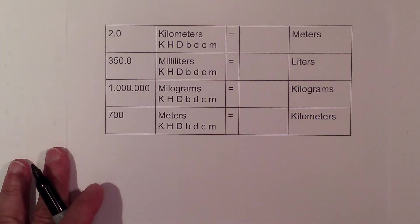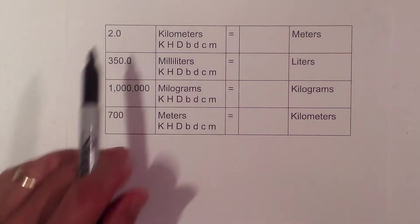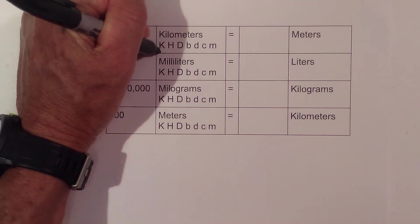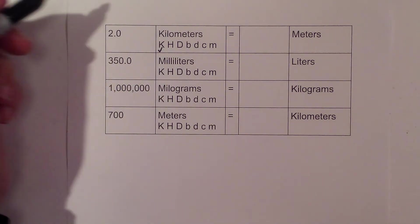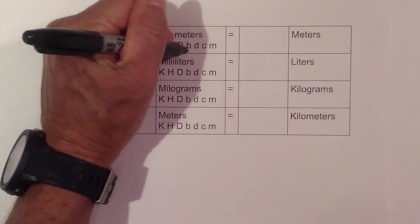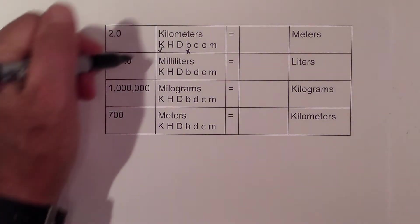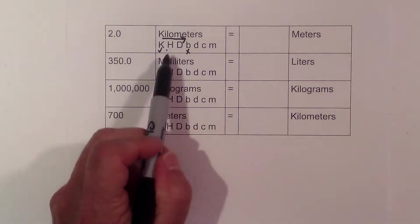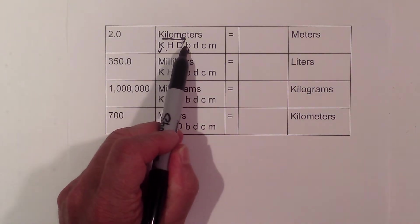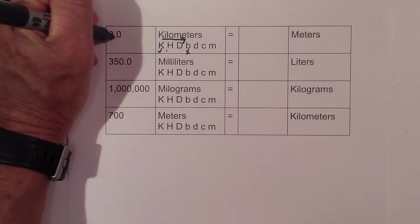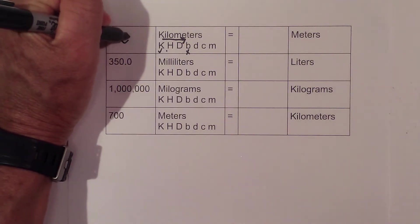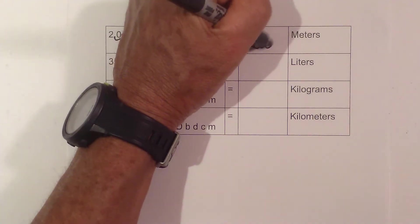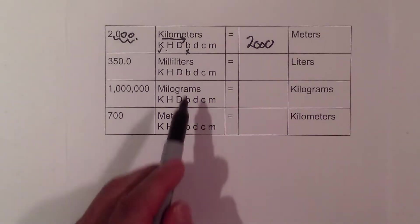Now let's work a couple more. Hopefully you're beginning to get the handle of this. We have 2 kilometers equals how many meters? I put a check where I began, which is kilometers. Meters is one of my base units, so I put an X. I go from the check to the X, telling me which direction I'm going. I count one, two, three decimal places. There's one, two, three. That looks like 2,000 meters.